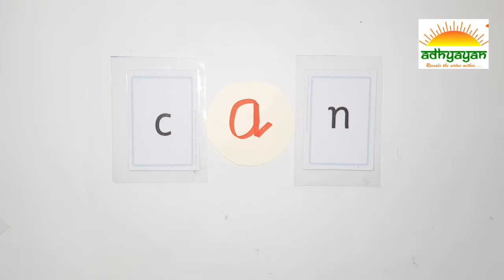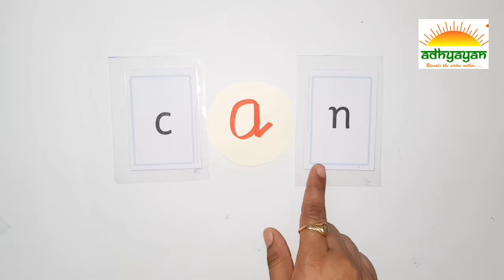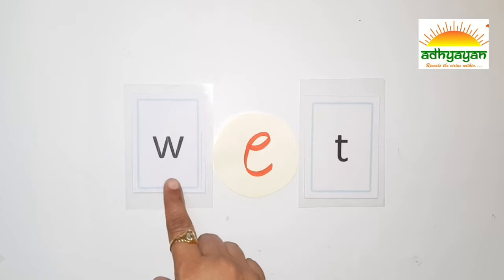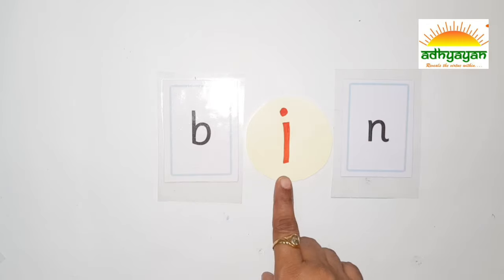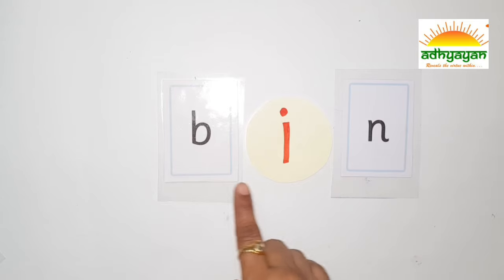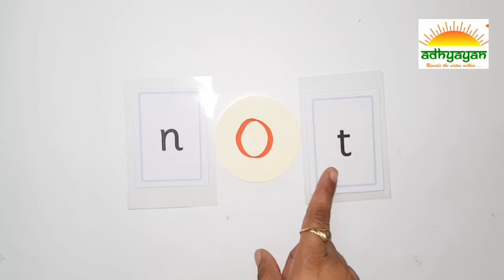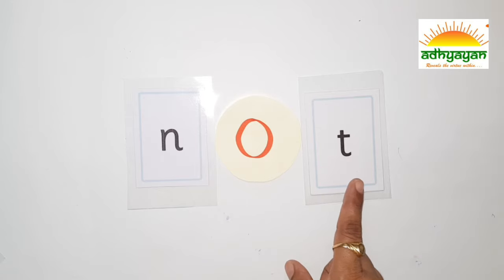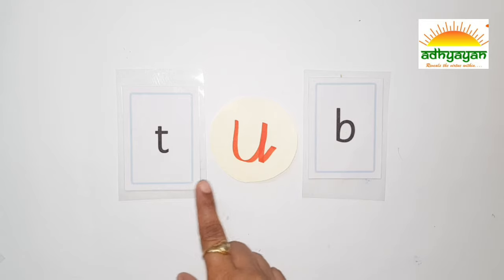Now let's go to read the words of short and long vowels. The first short vowel is A, and the word is: K-A-N — Can. W-E-T — Wet. B-I-N — Bin. N-O-T — Not. T-U-B — Tub.